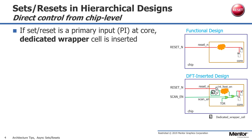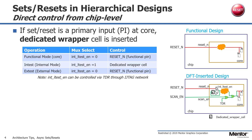If the set or reset is at a primary pin within the physical layout region, then a dedicated wrapper cell is inserted. This is done along with allowing the reset to be disabled during shift and tested during capture as described in the previous slide. The different modes in which this reset is operational are described in this table. The control of the MUX SELECT can be controlled via a TDR test data register that can be part of the IJTAG network.